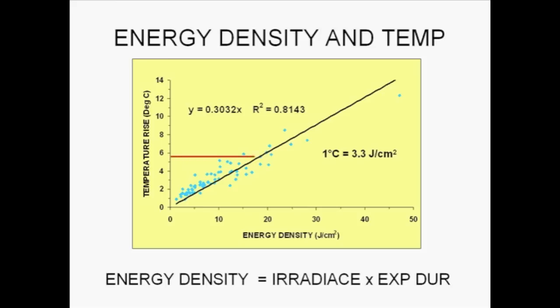Using this relationship, it can be determined that in order to generate the potentially damaging value of 5.5 degrees centigrade temperature rise, a total of 18 joules per centimeter squared would be needed.